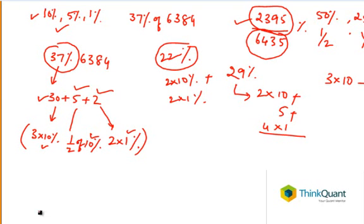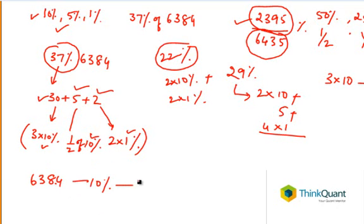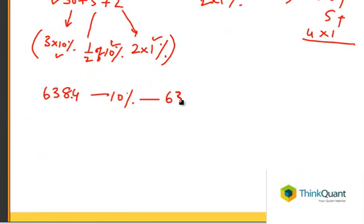So now let's fix the reference points for 6384. What is 10% of 6384? 10% is 1/10, so we move one decimal place to get 638.4. Now what is